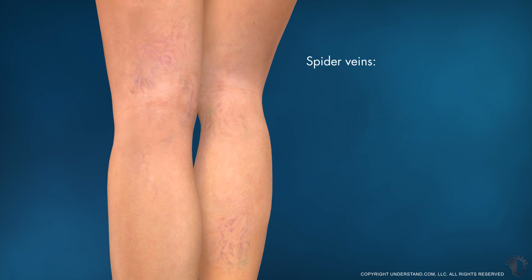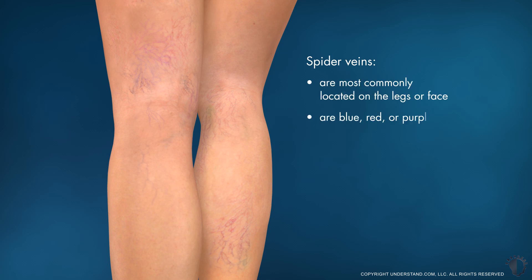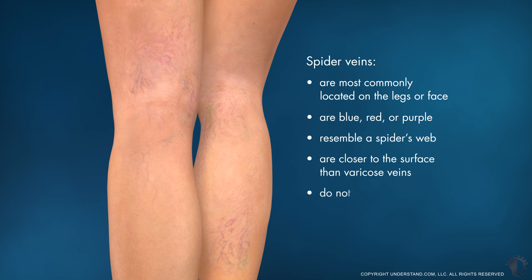Spider veins are small, damaged superficial veins that are most commonly located on the legs or face. Typically blue, red, or purple, these thread-like veins often resemble a spider's web. Spider veins are generally closer to the skin's surface than varicose veins and do not often cause pain. Spider veins are typically treated for cosmetic purposes.